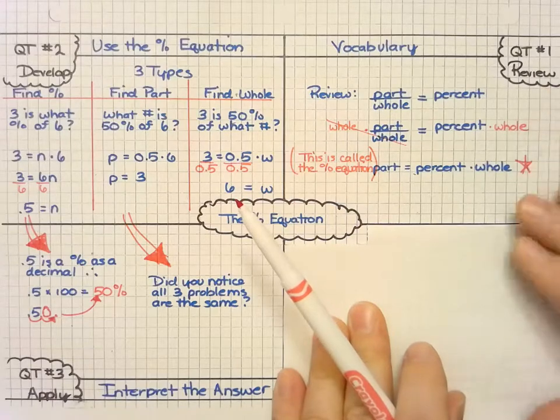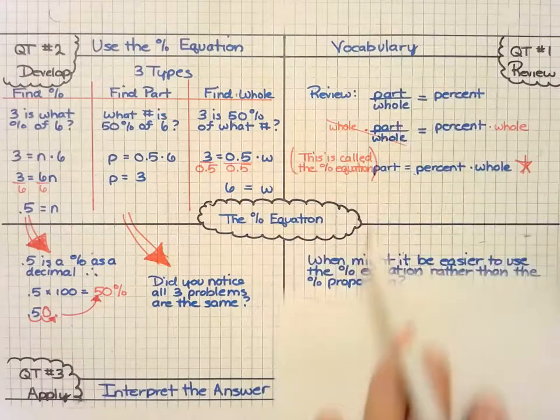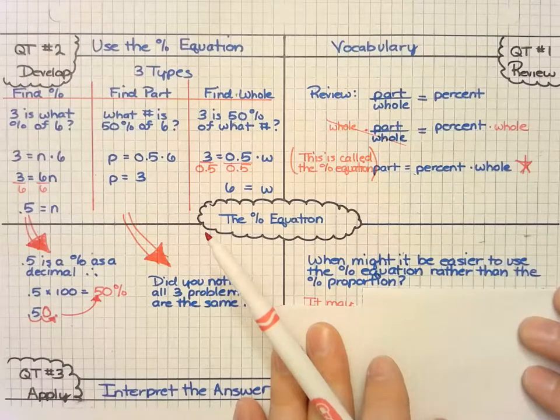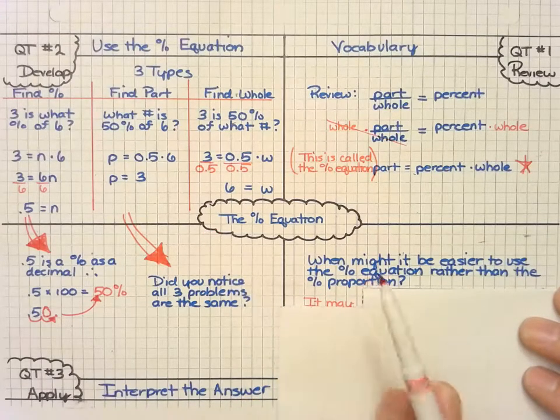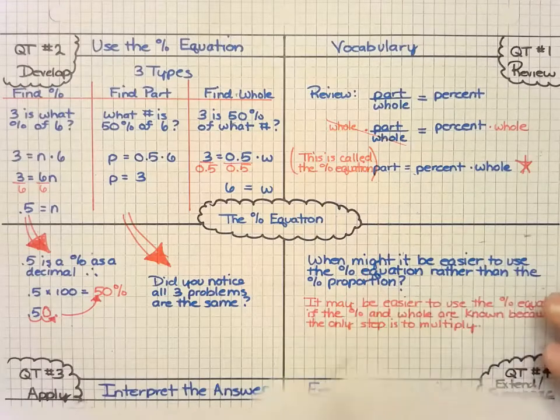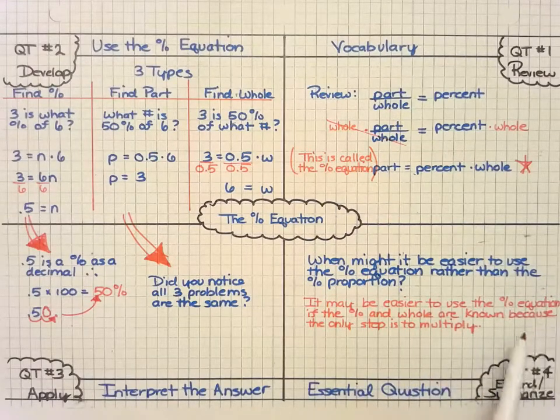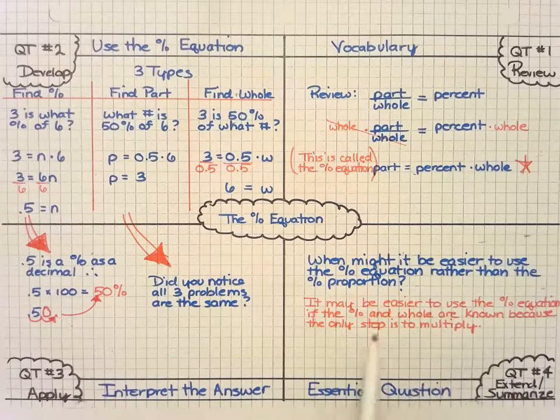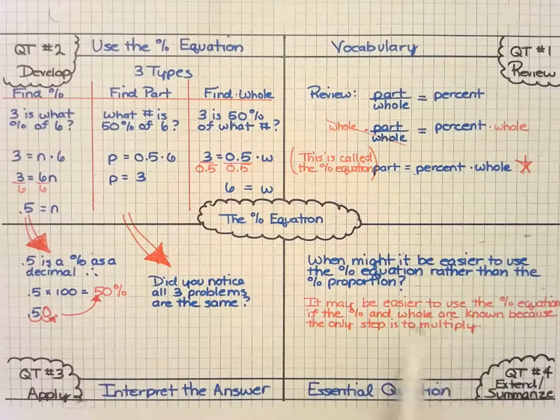Finally, our last quick tip is to answer an essential question today: When might it be easier to use the percent equation rather than the percent proportion? It may be easier to use the percent equation if the percent and the whole number are known, because the only step is to multiply.